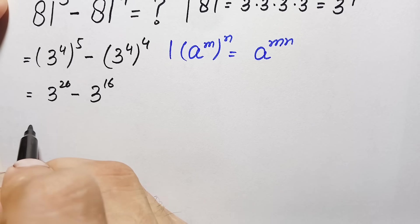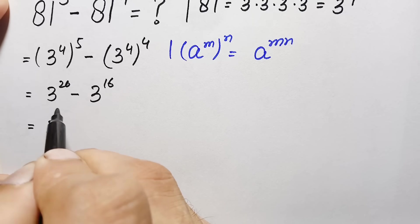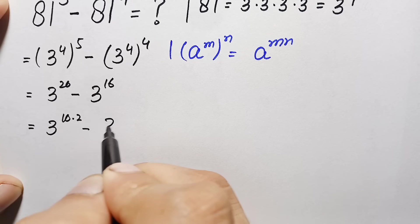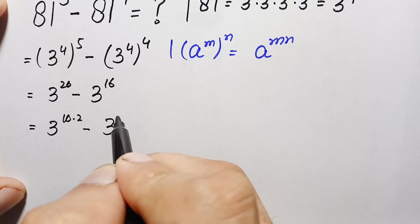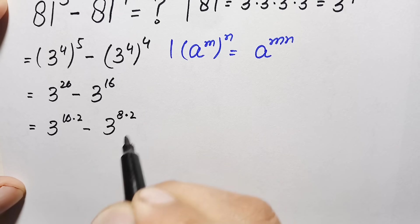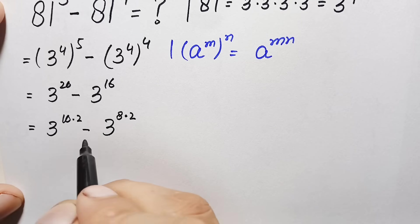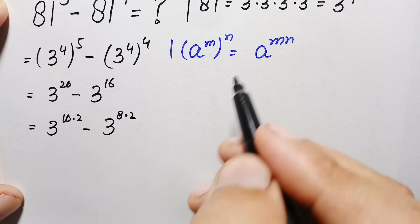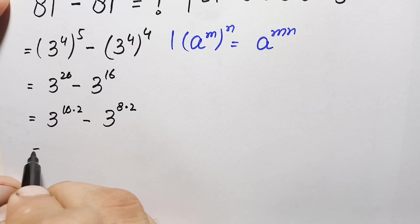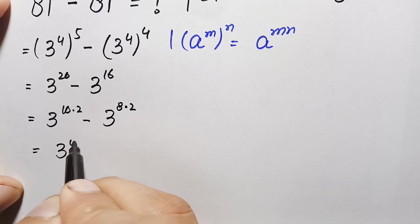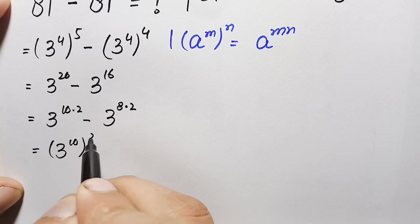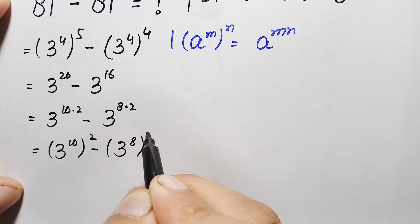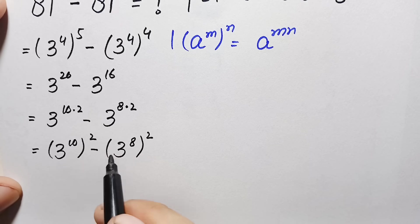Next, we can write these two numbers as 3 to the power 20 — where 20 can be written as 10 times 2 — minus 3 to the power 16 — where 16 can be written as 8 times 2. Again, using the exponential identity, we change these to: (3 to the power 10) squared minus (3 to the power 8) squared.